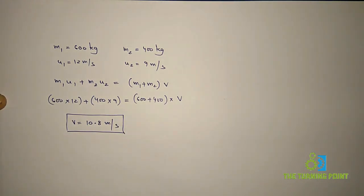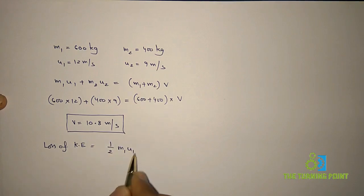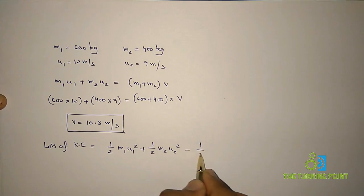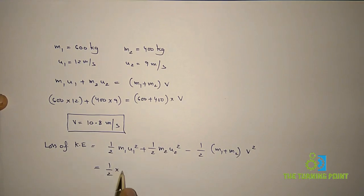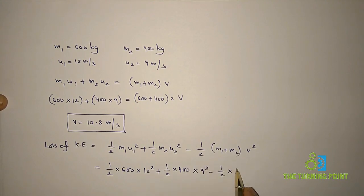We are also asked to calculate the loss of kinetic energy. Initial kinetic energy is (½·m1·u1²) + (½·m2·u2²) and final kinetic energy is ½·(m1+m2)·v². The loss equals initial KE minus final KE: (½ × 600 × 12²) + (½ × 400 × 9²) − ½ × 1000 × 10.8².